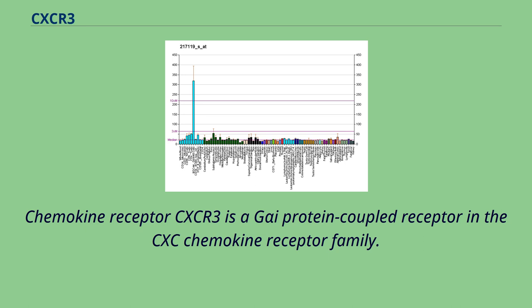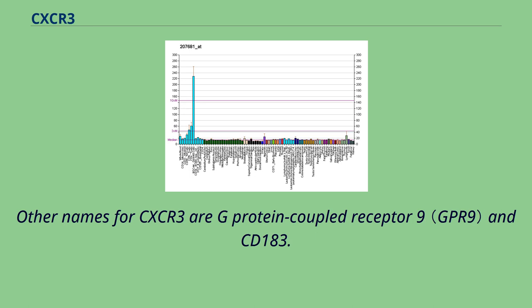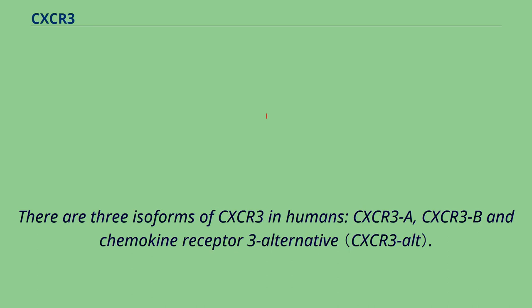Chemokine receptor CXCR3 is a G-alpha-I protein coupled receptor in the CXC chemokine receptor family. Other names for CXCR3 are G-protein coupled receptor 9 and CD183. There are three isoforms of CXCR3 in humans: CXCR3A, CXCR3B, and chemokine receptor 3 alternative.